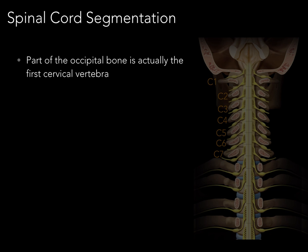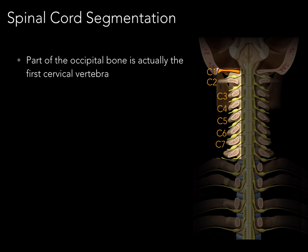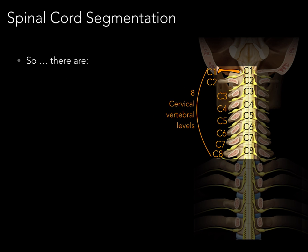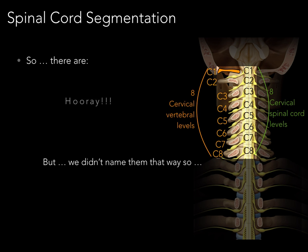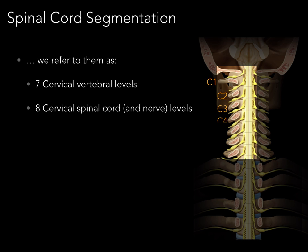To answer why there are seven cervical vertebrae but eight cervical spinal cord levels, we go back to embryology. Part of the occipital bone is actually the first cervical vertebra, formed from one somite whose sclerotomal portion went up to form part of the base of the occipital bone — that is C1. So C1 through C7, plus C8, gives eight cervical vertebral levels, matching the eight cervical spinal cord levels. However, we refer to them as seven cervical vertebral levels and eight cervical spinal cord and spinal nerve levels — that's why there seems to be a discrepancy, but there really isn't.